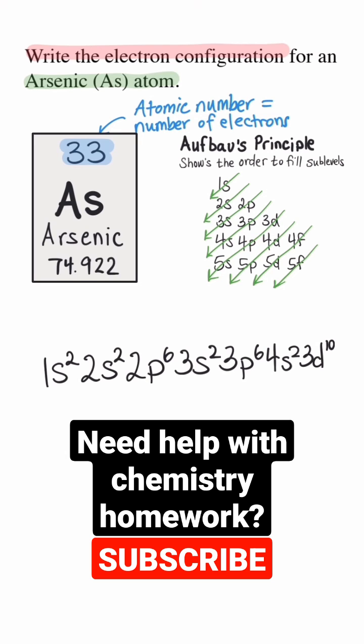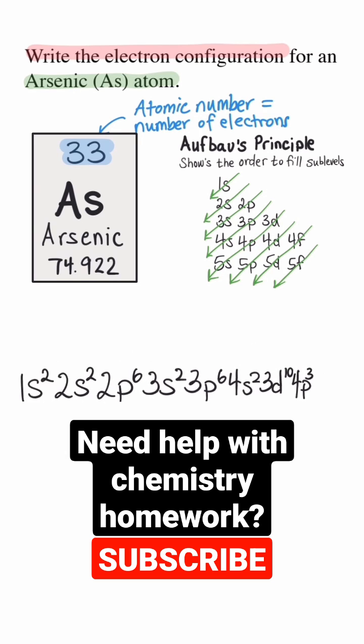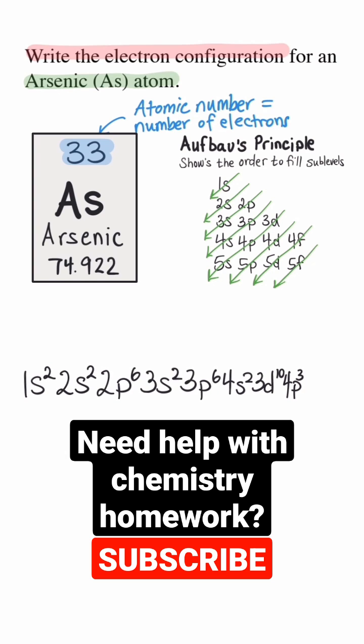The next sublevel is the 4p. A p sublevel can hold a maximum of 6 electrons, but we're only going to write a 3 because we have 3 electrons left.